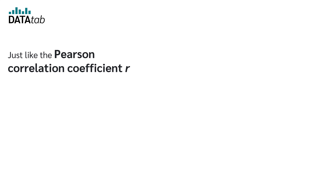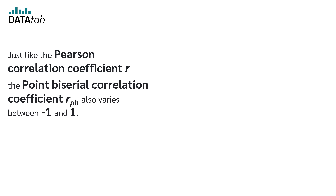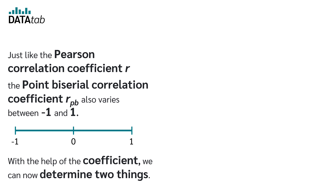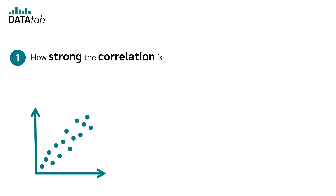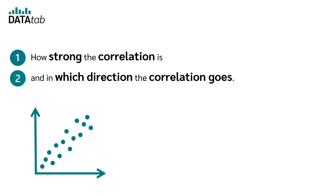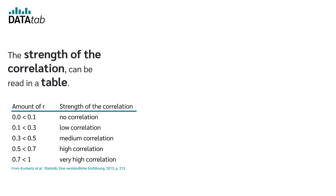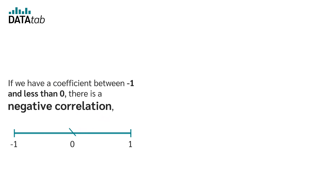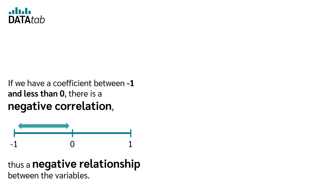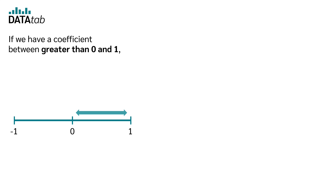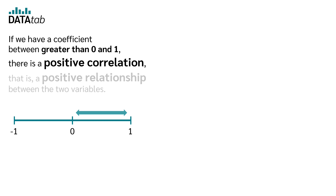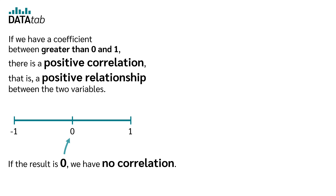Just like the Pearson correlation coefficient R, the point-biserial correlation coefficient R also varies between minus 1 and 1. With the help of the coefficient, we can determine two things: one, how strong the correlation is, and two, in which direction the correlation goes. If we have a coefficient between minus 1 and less than 0, there is a negative correlation — a negative relationship between the variables. If we have a coefficient between greater than 0 and 1, there is a positive correlation — a positive relationship between the two variables. If the result is 0, we have no correlation.